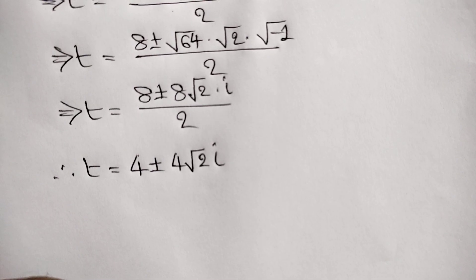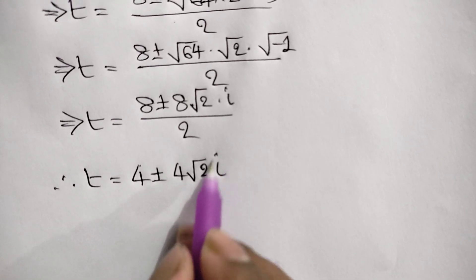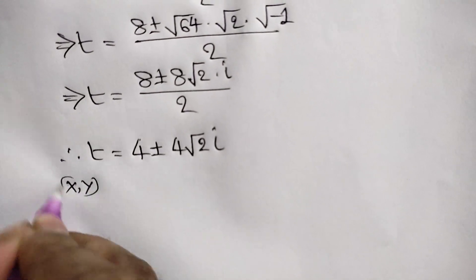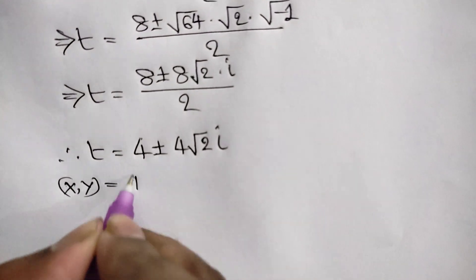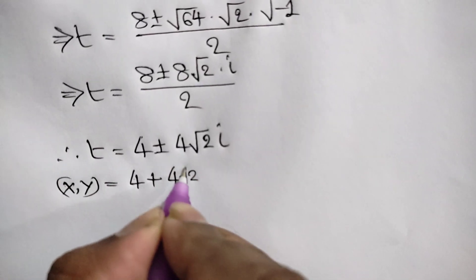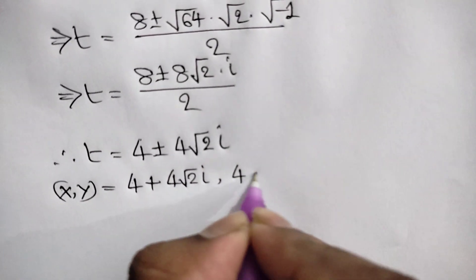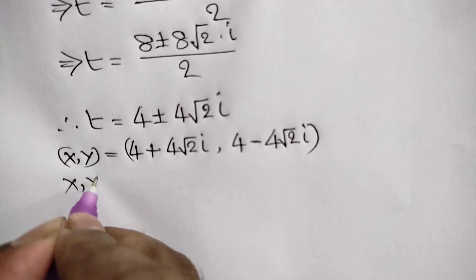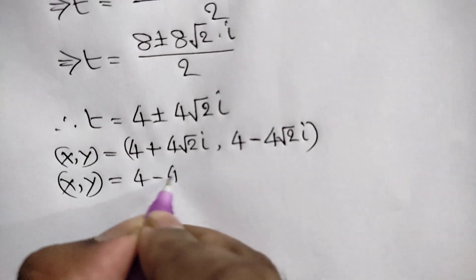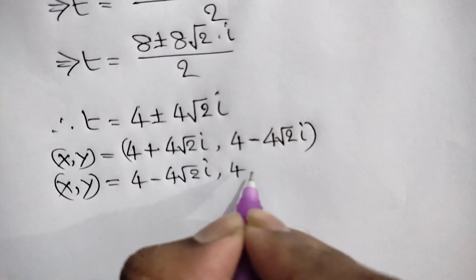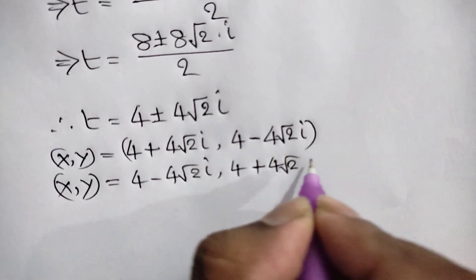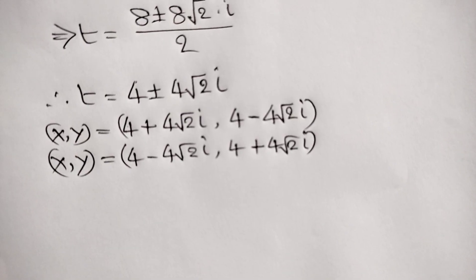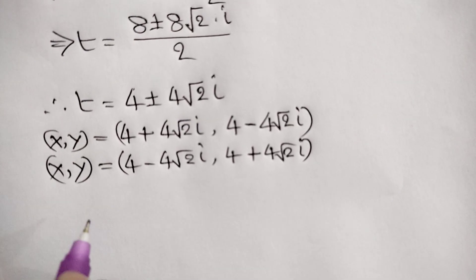The values of x and y are complex numbers because of the imaginary unit i. We can write: when x equals 4 plus 4√2·i, then y equals 4 minus 4√2·i. Conversely, when x equals 4 minus 4√2·i, then y equals 4 plus 4√2·i. There are no real solutions for x and y — the solutions are complex numbers.